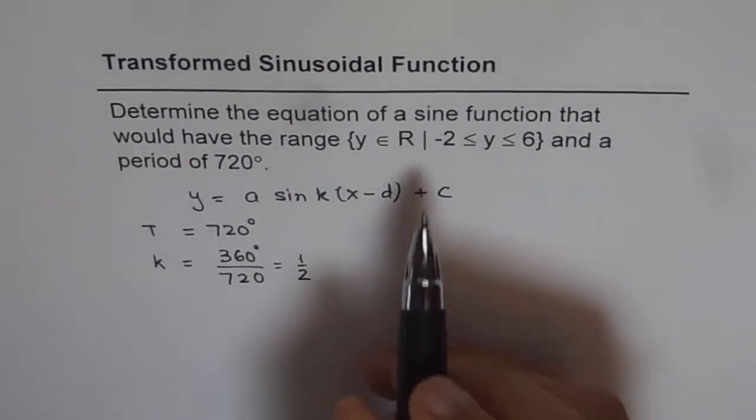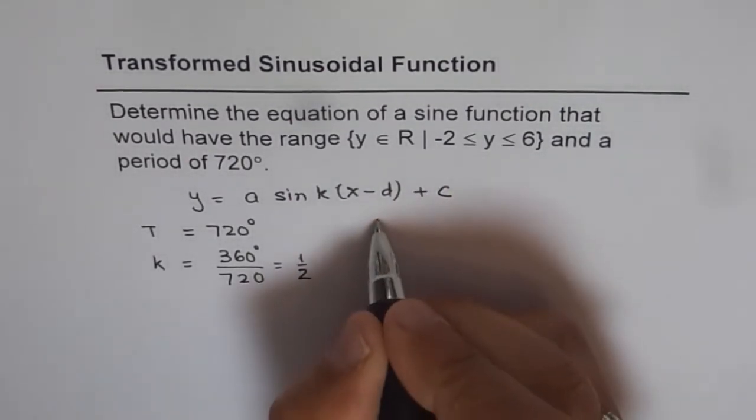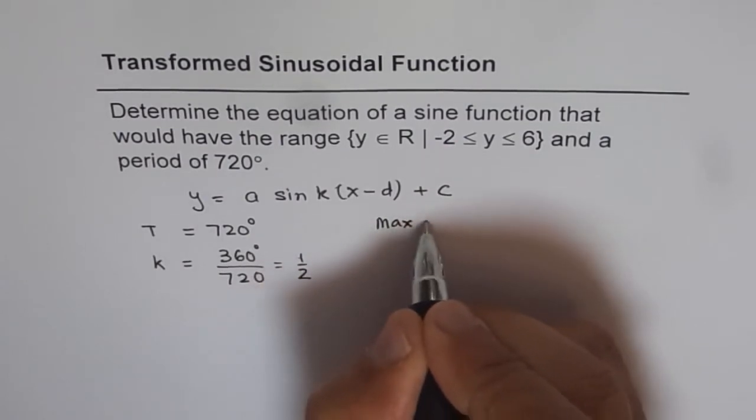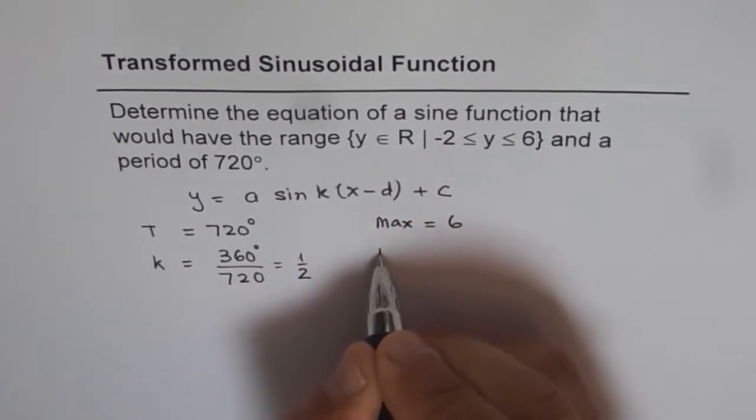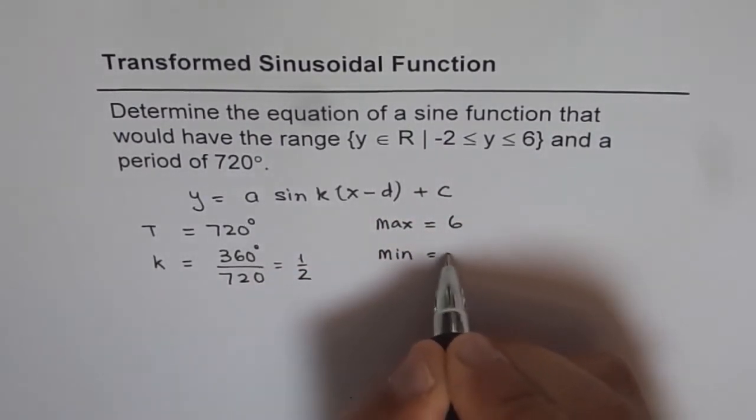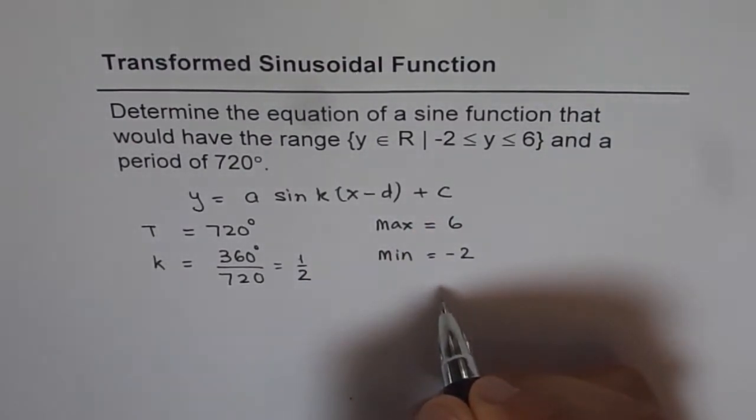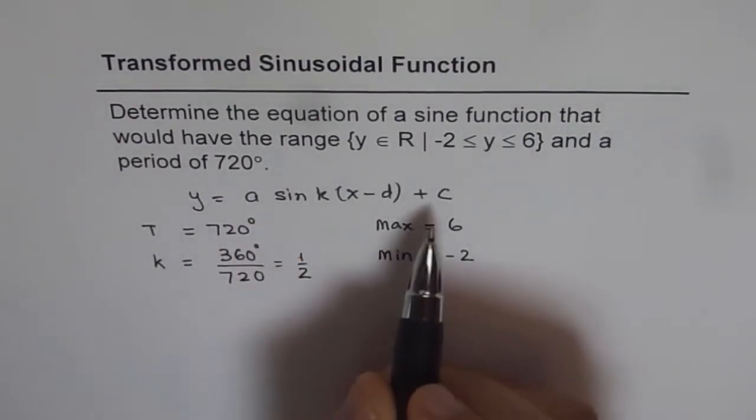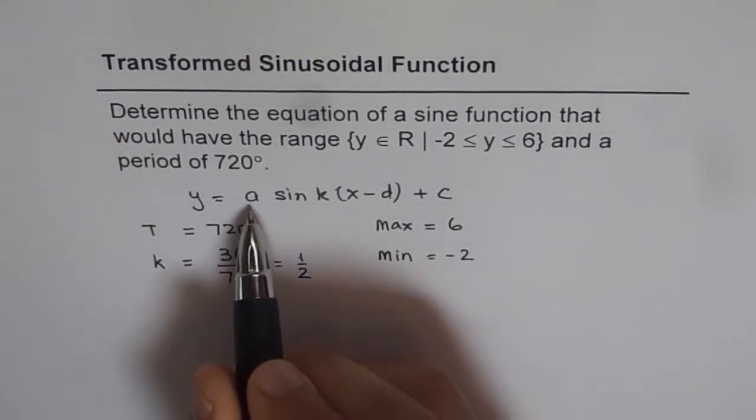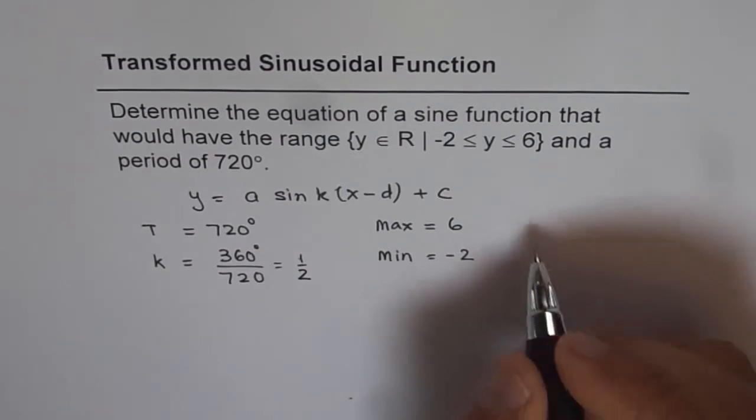Now we are given maximum and minimum values. So maximum value is given to us as 6 and minimum is given to us as minus 2. From maximum and minimum we can find the axis and we can find amplitude. Axis is c, amplitude is a. So let us find amplitude first.